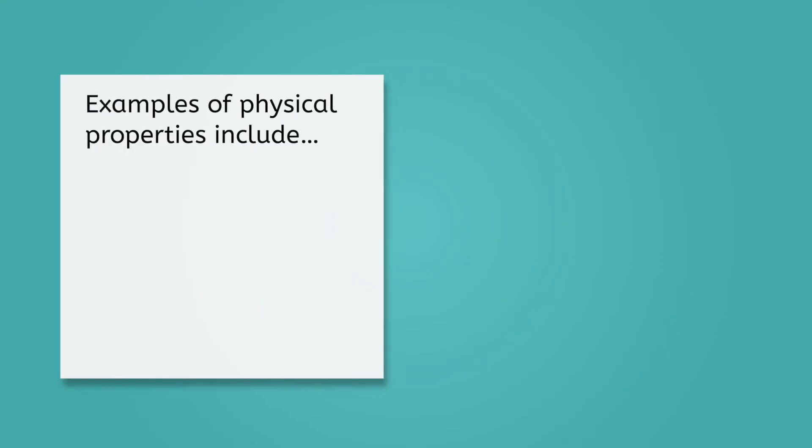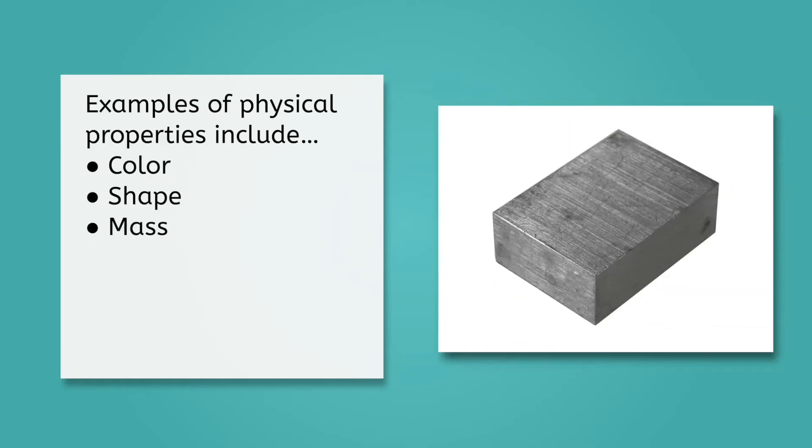Can you think of some more examples of physical properties? Some examples include color, shape, and mass. What about density? Can you find the density of this metal without changing it? Yes, you can by calculating the volume and measuring the mass.